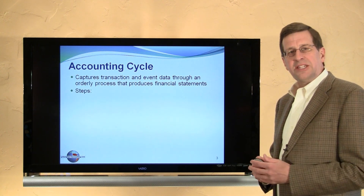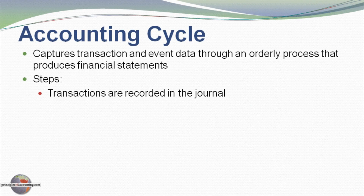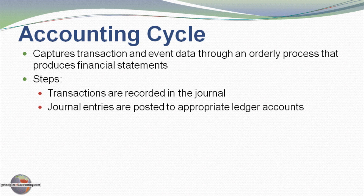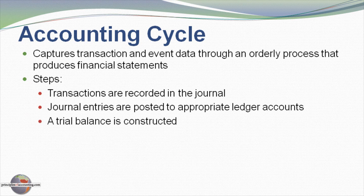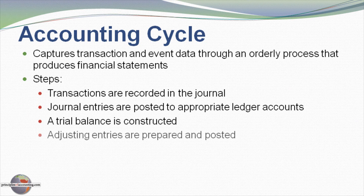There are various steps in the accounting cycle. Ordinarily we think about the first step being the examination of transactions and events and the preparation of a journal entry. Those journal entries are periodically posted to appropriate ledger accounts. From those ledger accounts a trial balance can be constructed, and examining that trial balance may provide additional reason to consider the need for adjusting entries so that income is properly measured for the particular accounting period.